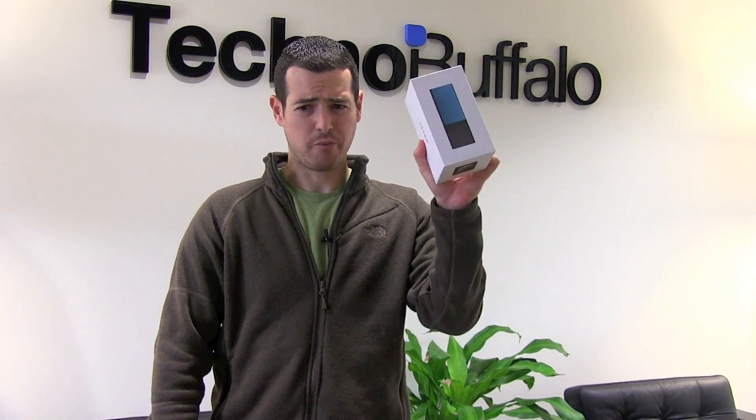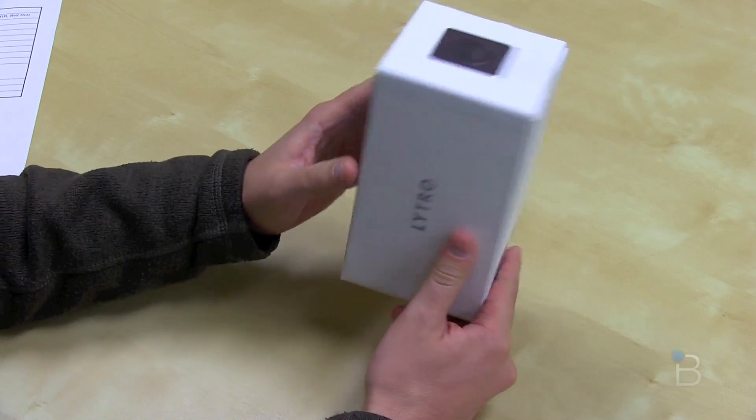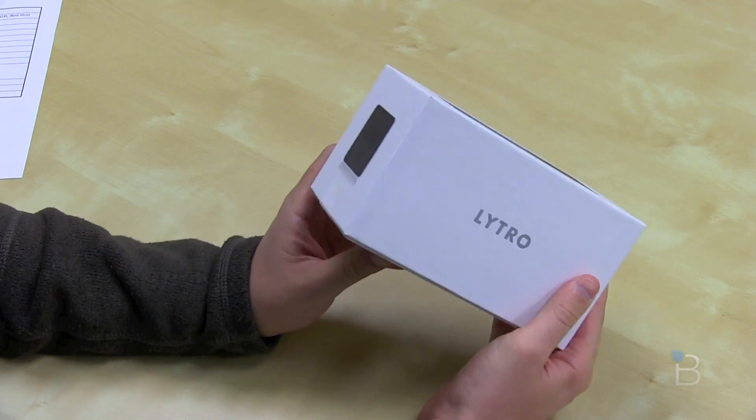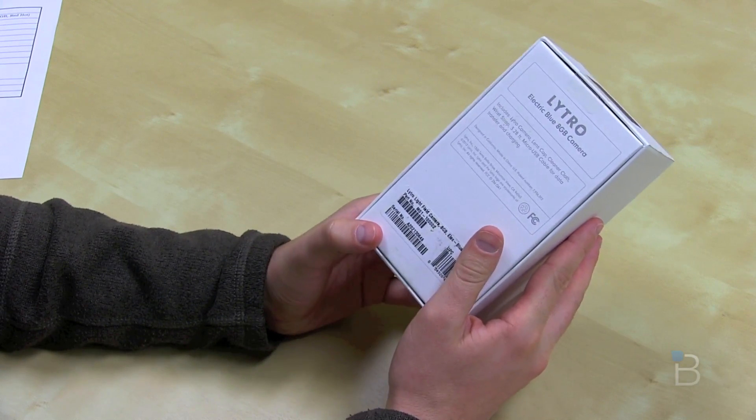So without further ado, let's go ahead and open this guy up. All right, so here is the Lytro camera in its now familiar looking white cardboard box. Picture of the camera on the front, Lytro on the side, camera lens looking at you, and some specs on the back.